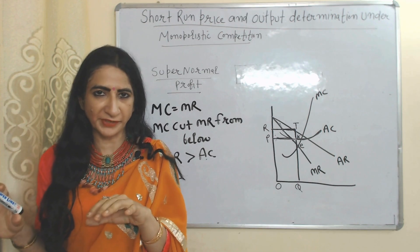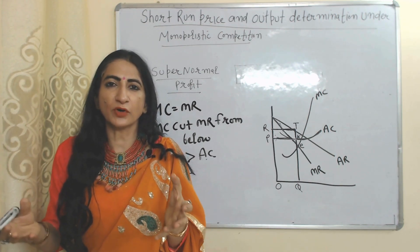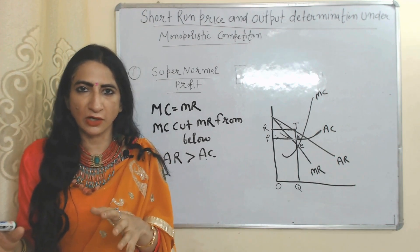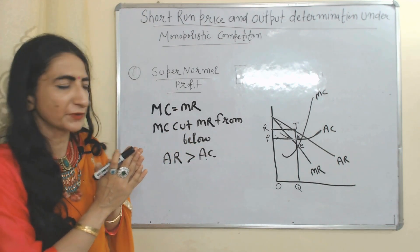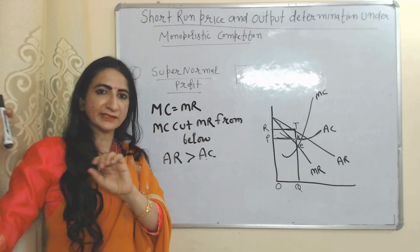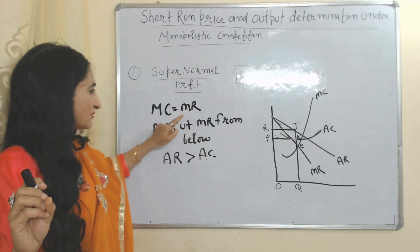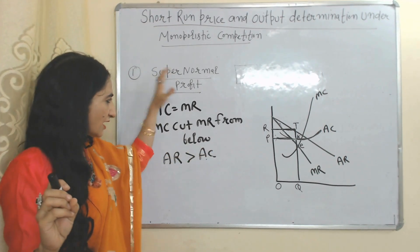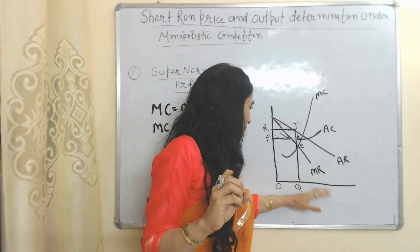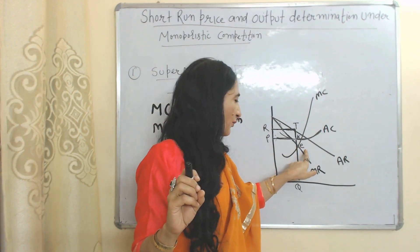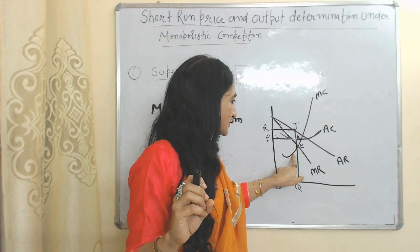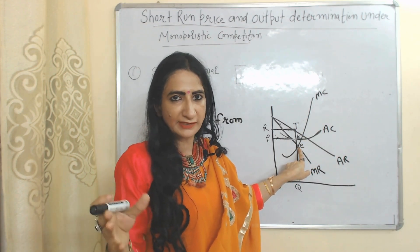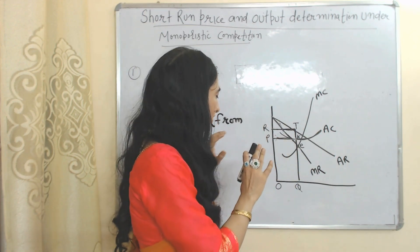Similar to perfect competition, monopolistic competition also faces three kinds of situations during the short time period: super normal profit, normal profit, and loss. Conditions of super normal profit are the same as earlier discussed: MC equal to MR, MC cuts MR from below, average revenue is more than average cost. On the X-axis we have output, on the Y-axis we have price, revenue and cost. E is our equilibrium point. At this equilibrium point you can see MC equal to MR, plus MC cuts MR from below, so our two conditions of super normal profit are satisfied.